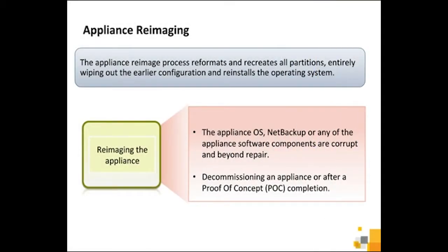The appliance re-image process reformats and recreates all partitions, entirely wiping out the earlier configuration, and reinstalls the operating system. Re-image the appliance in situations where the appliance operating system, NetBackup, or any of the appliance software components are corrupt and beyond repair. Re-imaging is also used when decommissioning an appliance or after a proof-of-concept or POC completion.